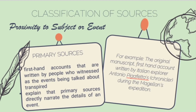In the case of tribes that cannot write, anthropologists or other scientists write on their behalf based on what the people articulate. A good example of a primary source is the original manuscript written by Italian explorer Antonio Pigafetta during Magellan's expedition, because the exact reason Pigafetta was involved in the expedition was to document the whole exploration. His manuscript is considered a primary source because he was actually there — he witnessed and experienced the entire event.